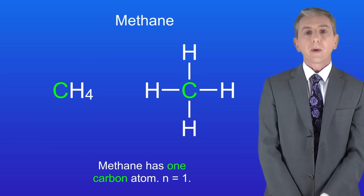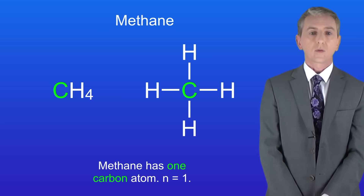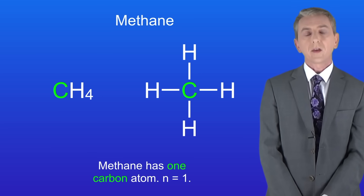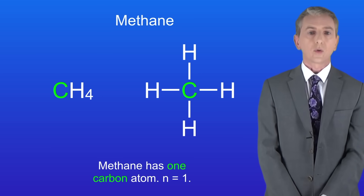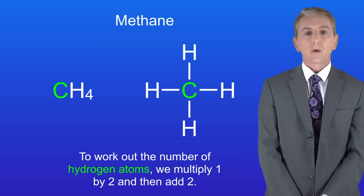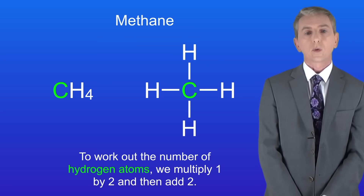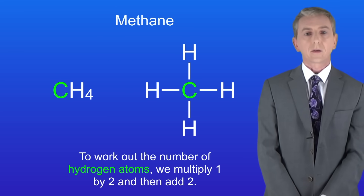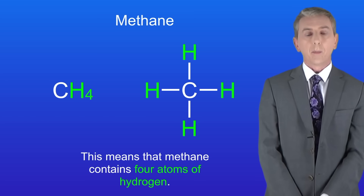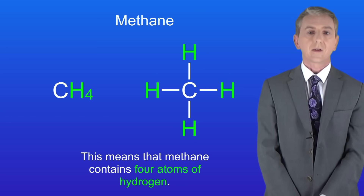Going back to methane, we can see that methane has one carbon atom, so in this case n equals 1. To work out the number of hydrogen atoms, we multiply 1 by 2 and then add 2. This means that methane contains 4 atoms of hydrogen.